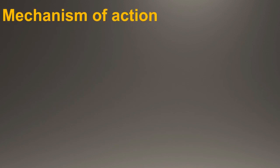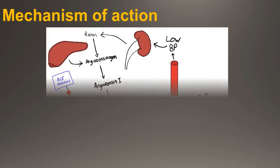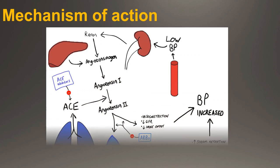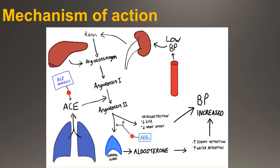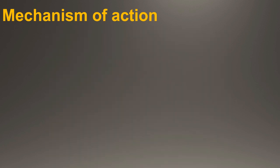Mechanism of Action: The mechanism of action of Captopril has not yet been fully elucidated. Its beneficial effects in hypertension and heart failure appear to result primarily from suppression of the renin-angiotensin-aldosterone system. However, there is no consistent correlation between renin levels and response to the drug.